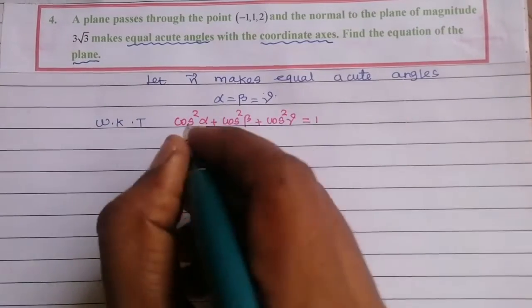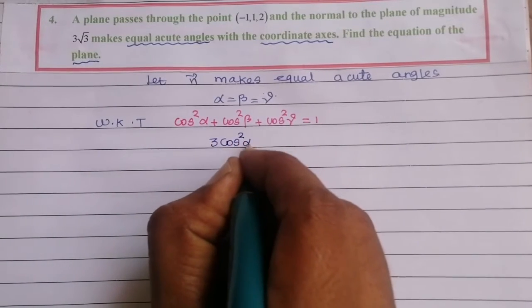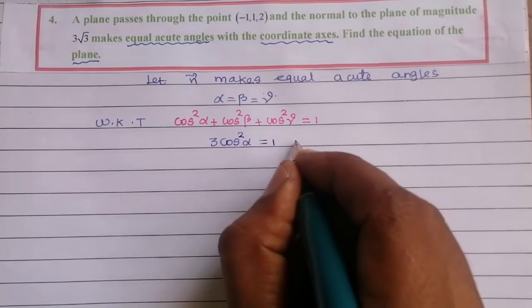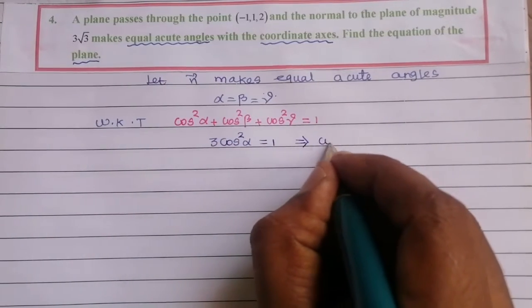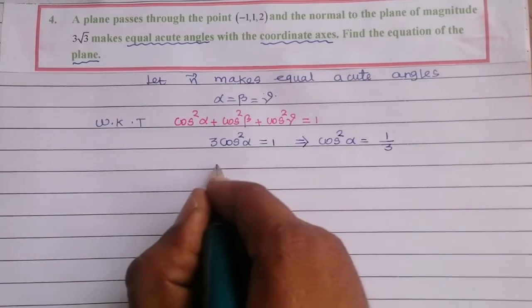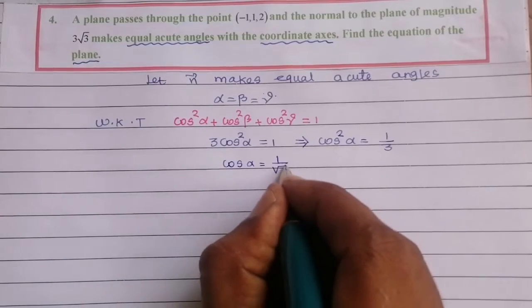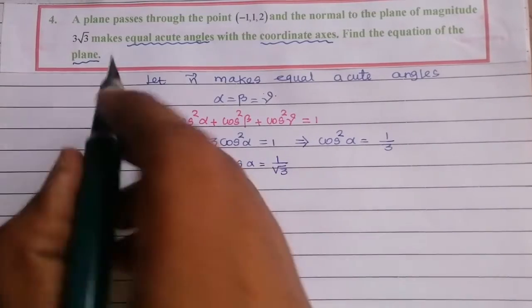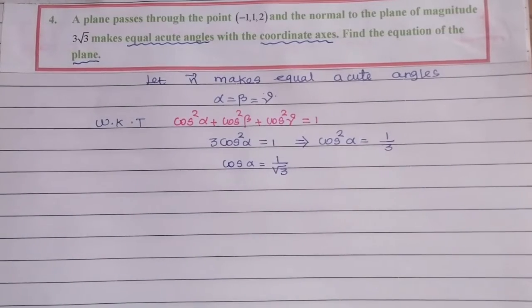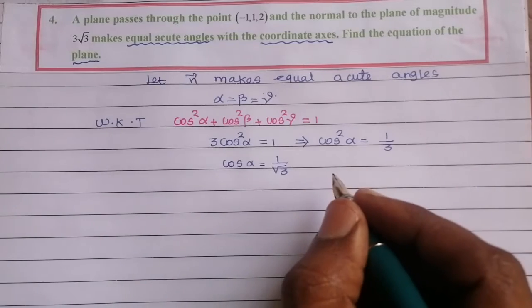Since α = β = γ, we get 3cos²α = 1, which implies cos²α = 1/3, so cosα = 1/√3 (taking positive value since angles are acute).